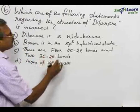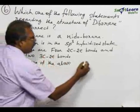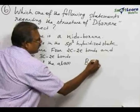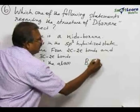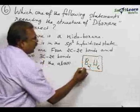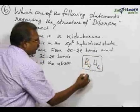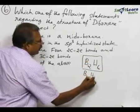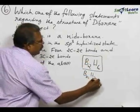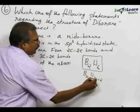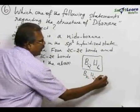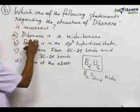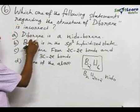Boron forms diborane of the formula B₂H₆. B₂H₆ is in the format BₙH₂ₙ₊₂, which is the formula of a nido-borane. Therefore, the first statement is correct.